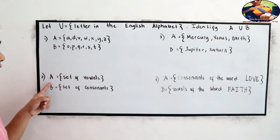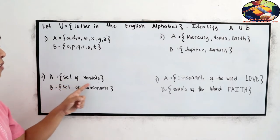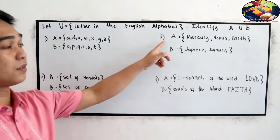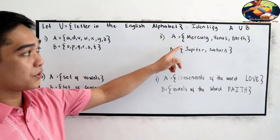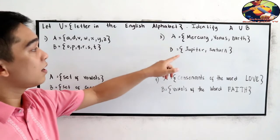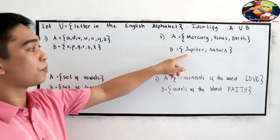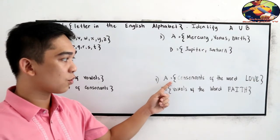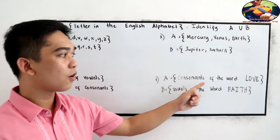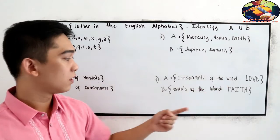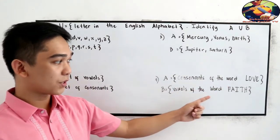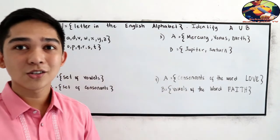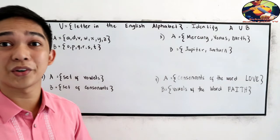For number 2, set A = set of vowels, set B = set of consonants. For number 3, set A = {Mercury, Venus, Earth} and set B = {Jupiter, Saturn}. For number 4, set A = consonants of the word 'love' and set B = vowels of the word 'faith.' You can pause the video to answer numbers 1 through 4.